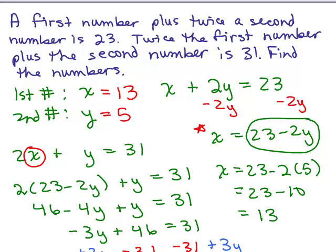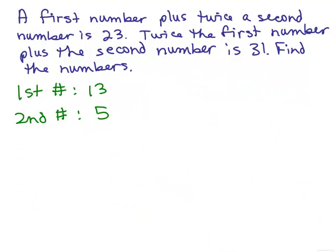Now that you know that the numbers are 13 and 5, you need to make sure that you check that in the original words given, and then write your answer in a sentence. So let's do that.